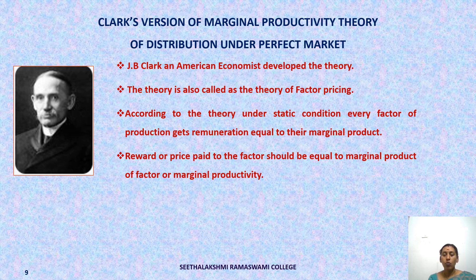This theory was given by J.B. Clark, an American economist, who developed the marginal productivity theory of distribution in a number of articles and later published in his book titled The Distribution of Wealth. This theory is also called the theory of factor pricing. In the words of J.B. Clark: under static conditions, every factor, including the entrepreneur, will get a remuneration equal to its marginal product.